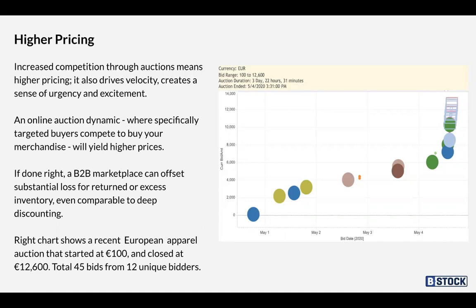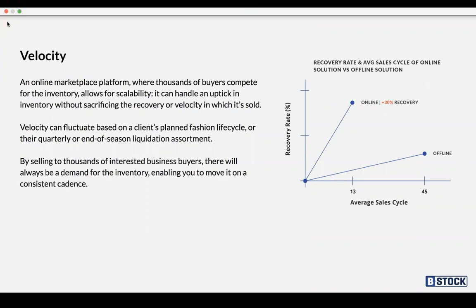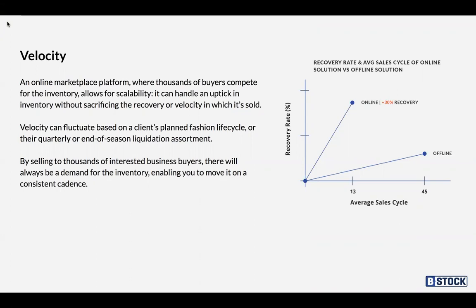To balance higher pricing, we also need to ensure we can achieve velocity. Velocity is another really important part of the seller's marketplace — we need to ensure inventory is coming through, stock is available for our buyers, and the marketplace can handle an increase in volume. After COVID, we're expecting a mass increase in the amount of stock coming through our marketplaces. We're confident our existing and growing buyer base will be able to handle this velocity while still achieving that higher recovery.